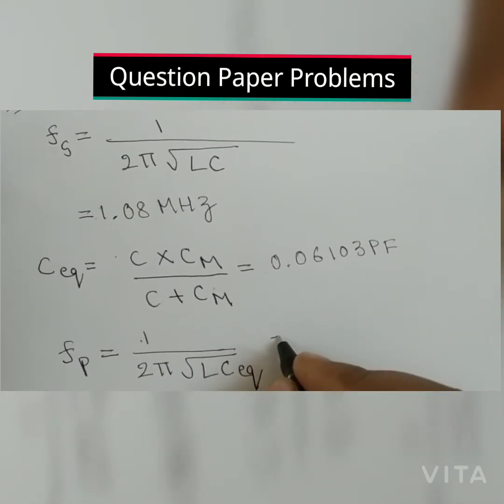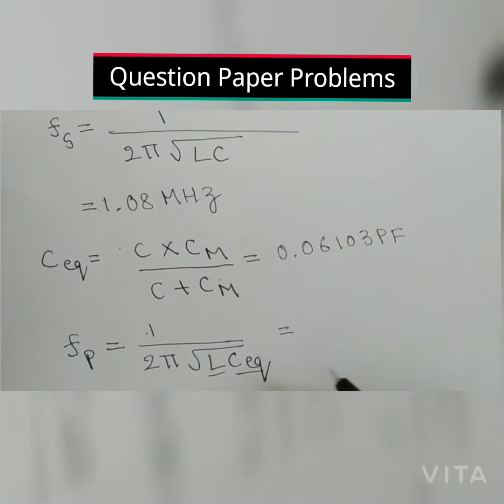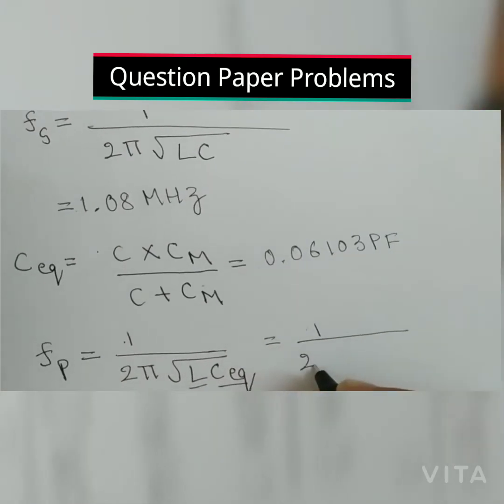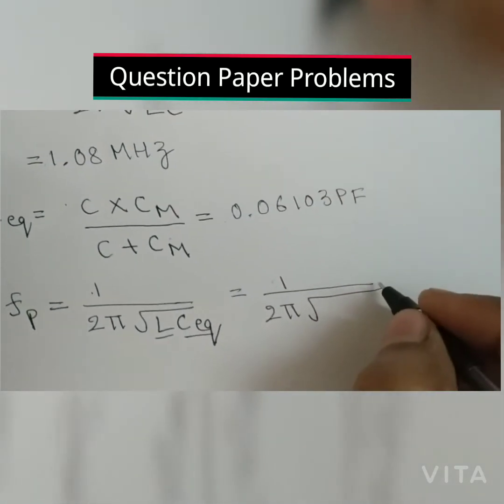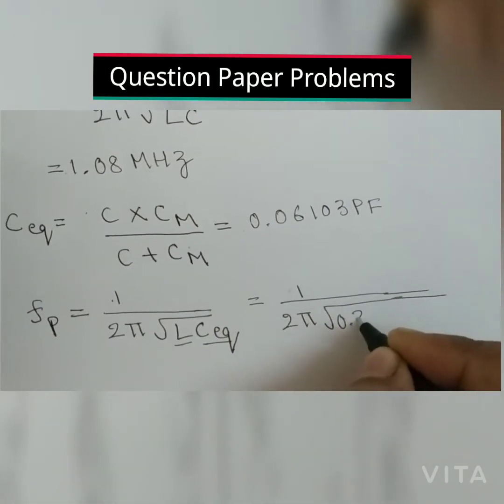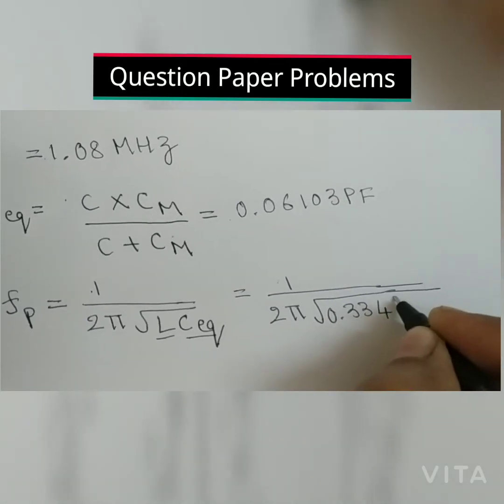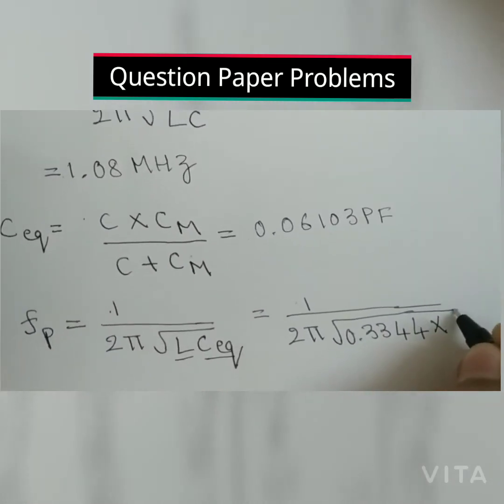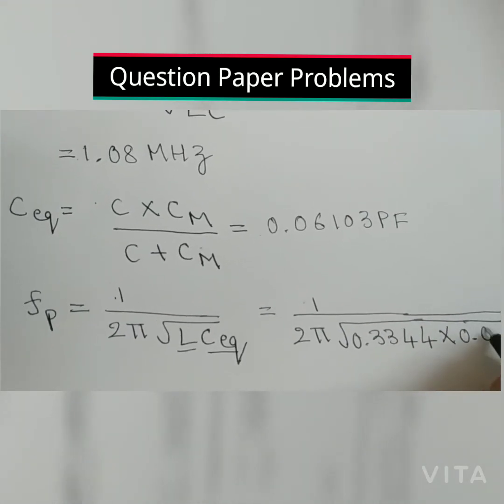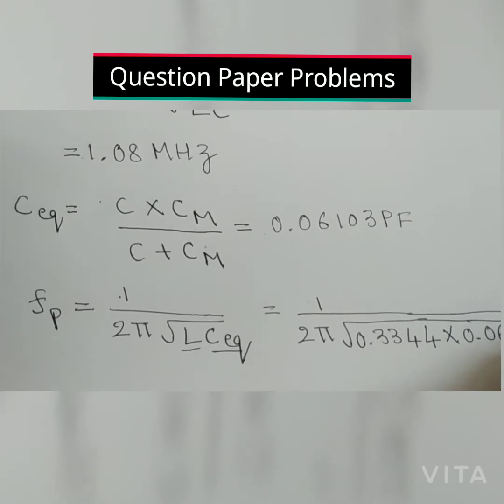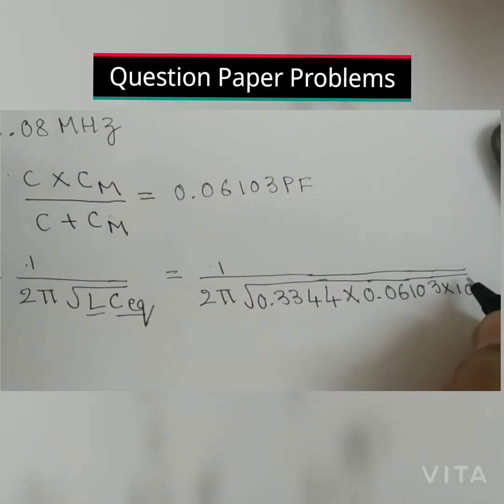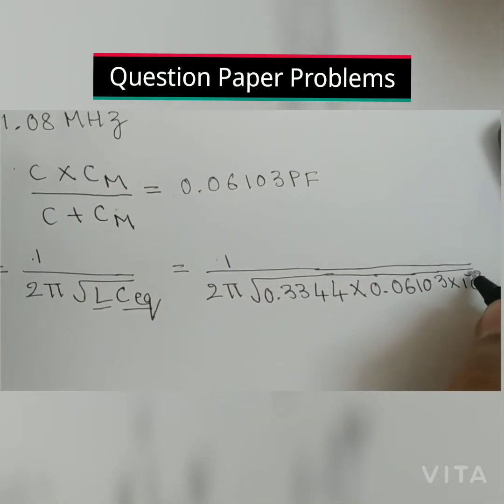So we know the value of L and also C equation. Substitute into the formula: L value they have given is 0.3344 times C equation value we got, 0.06103 times 10 to the power of minus 12.